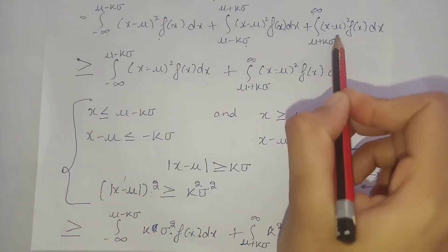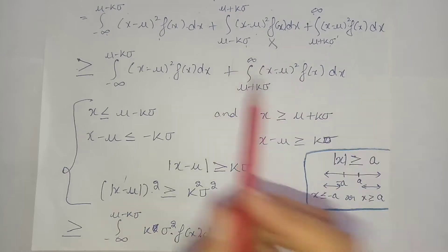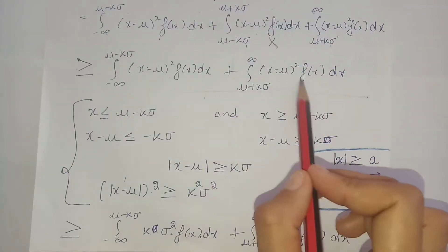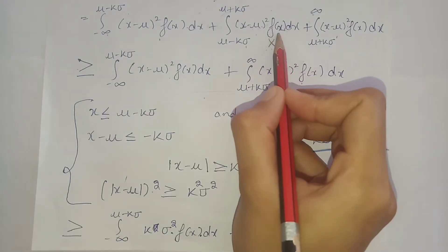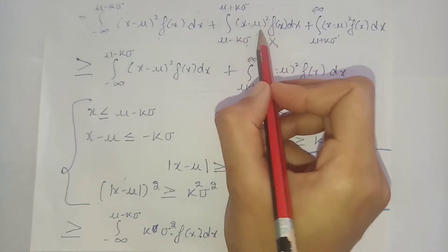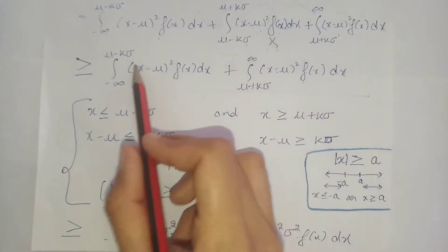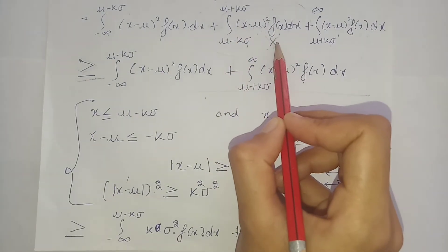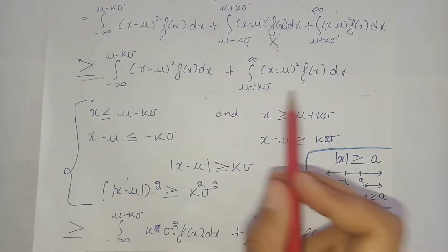If we cancel the middle term — that is, drop the integral over the middle range — we get a new expression that is less than or equal to the original. This is valid because the middle term is always positive: the probability density function is non-negative. So removing it gives us a smaller or equal value, and we retain equality only if that term is zero.